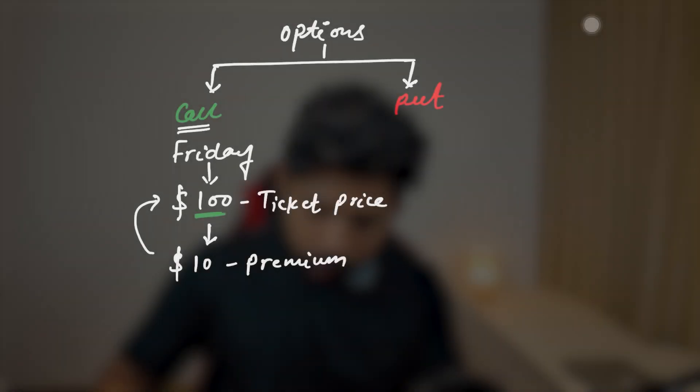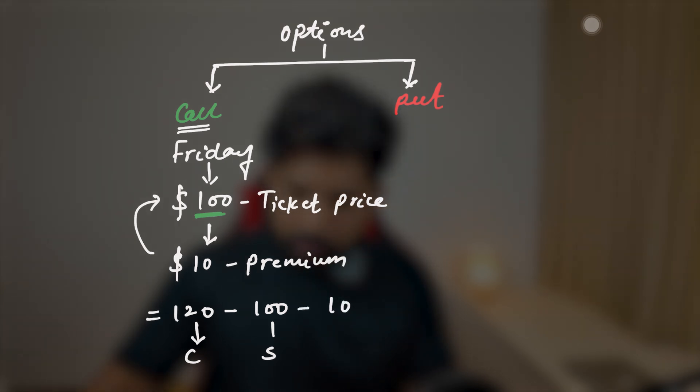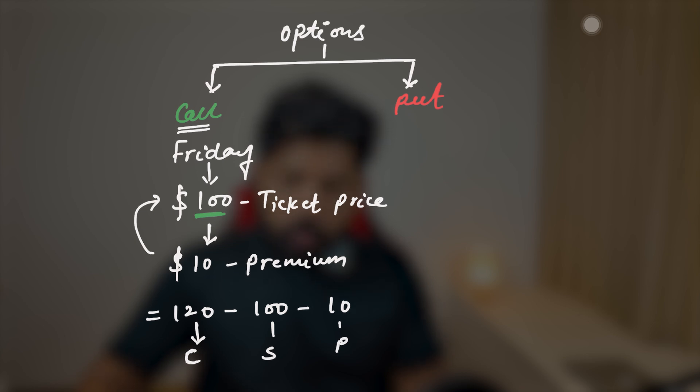If the price increases on the weekend — say on Sunday it becomes $120 — then you can exercise your right. Because the option gives you the right to buy, not the obligation. If you want, you can buy; if you don't want, you can leave it. The seller has the obligation and you have the right. If you ask the seller, today's price is $120 but you bought the right at $100 and paid a $10 premium, so the seller must give you the shares at $100. The current price is $120, you bought at $100 (the strike price), and paid a $10 premium — also called the exercise price. Your profit becomes $10.